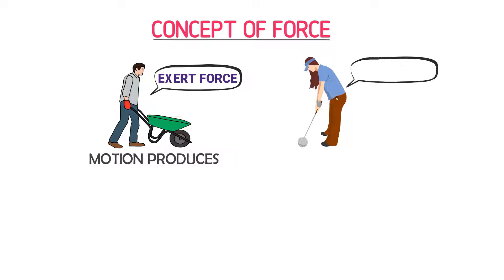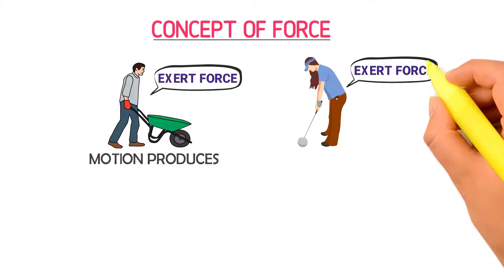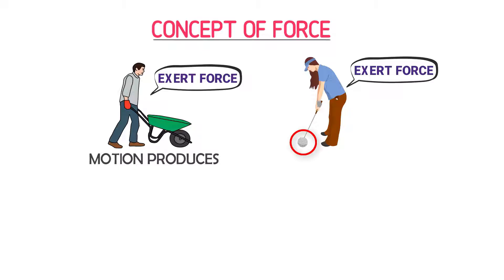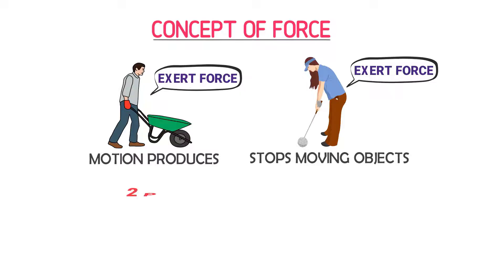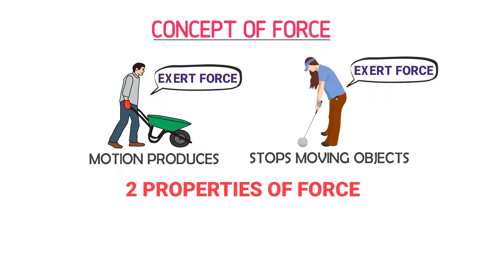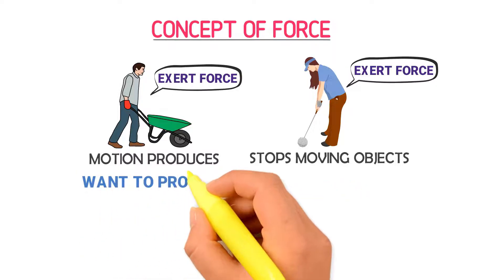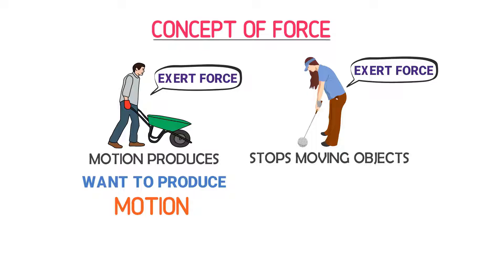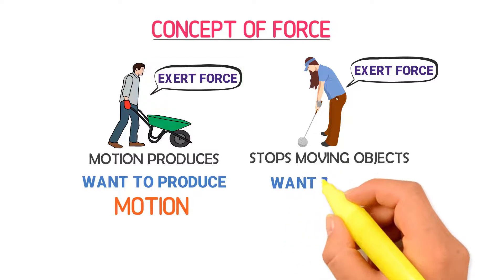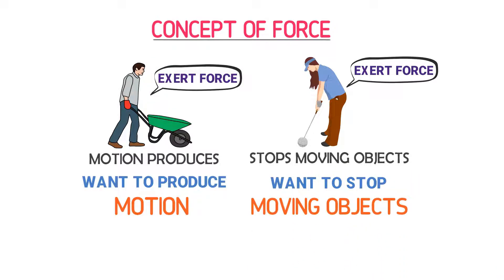Secondly, in this example, you exert force on this fast moving ball. As a result, it stops. Thus, you can also say that force stops moving objects. Therefore, remember these two very important properties of any force: if you want to produce motion in an object, you need to apply force; and if you want to stop a moving object, you again need to apply force.